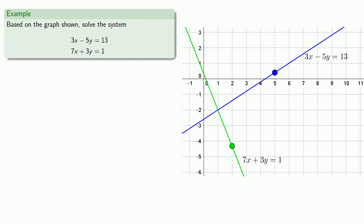If I want a point that satisfies both equations, I need a point that's on both lines, and that means I have to find the intersection point. So we see that the graphs intersect at the point 1, negative 2, so x equals 1, y equals negative 2 is a solution to the system of equations.